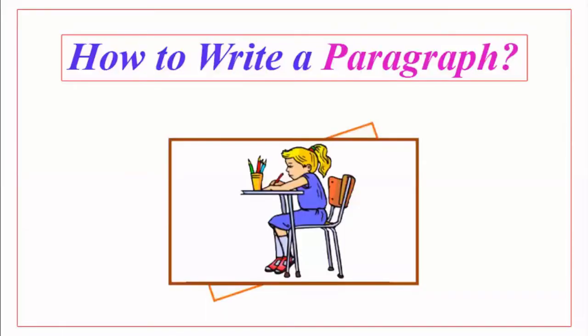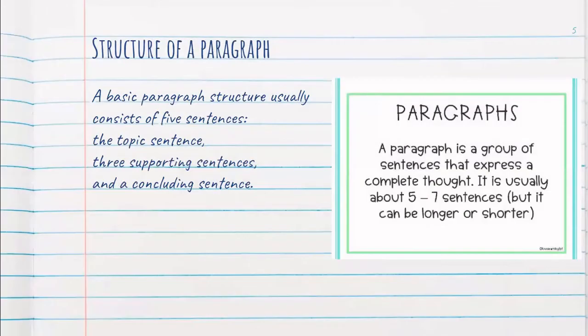Now we will learn how to write a paragraph. We had already introduced paragraph writing earlier. The basic structure of a paragraph usually consists of five to seven sentences. The first sentence is a topic sentence. Then you need a minimum of three supporting sentences — three different points supporting your topic sentence. And at the end, you can have one to two concluding sentences.